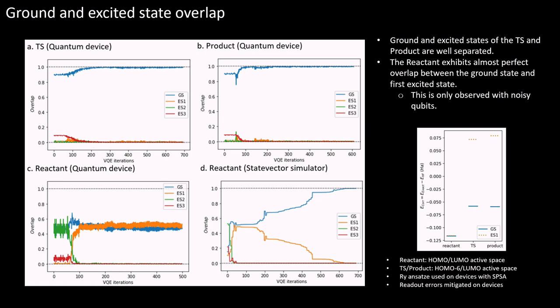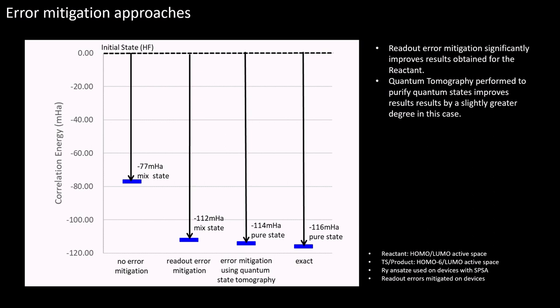What can we do to improve these results? We have tracked the overlap of the ground and excited states of each of the stationary points throughout the course of the optimization. We observed that the overlap between the ground and excited states of the transition state and product start with a small amount of overlap, and then they diverge through the course of the optimization until there's no overlap at the end. However, the reactant starts off being highly mixed, but the ground state overlap shows no separation whatsoever from excited states over the course of the optimization. We end up with an almost 50-50 mixture of the ground state and the first excited state at the end. It should be pointed out that this behavior is different when noise is not present. There's very little overlap of the ground state and excited states on the state vector simulator with no noise.